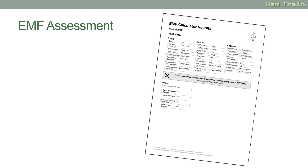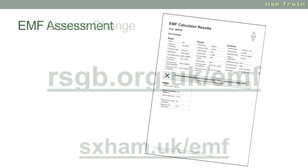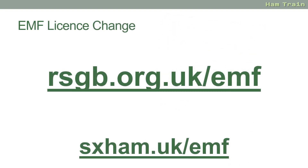If for any reason you don't comply, you do need to look at your antenna system. Maybe you need to raise the height or increase the separation between the antenna and members of the public, operate a different mode which uses less power, or indeed reduce your power. There are several things you can do.